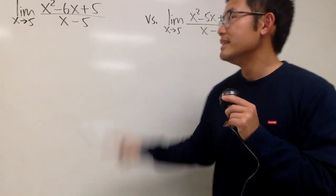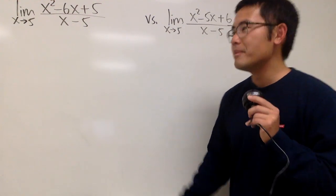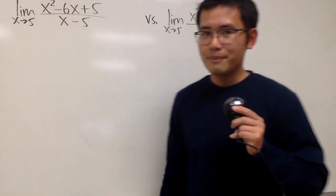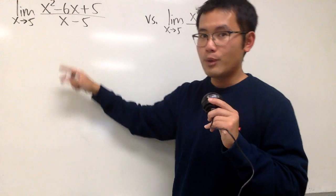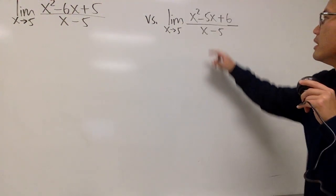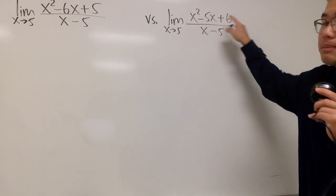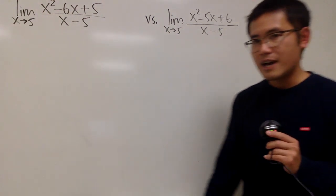Okay, we have two limits on the board. They look really similar. Both of them, x approaching 5. However, for this one we have x² - 6x + 5 over x - 5. But for the second one, we have x² - 5x + 6 over x - 5.